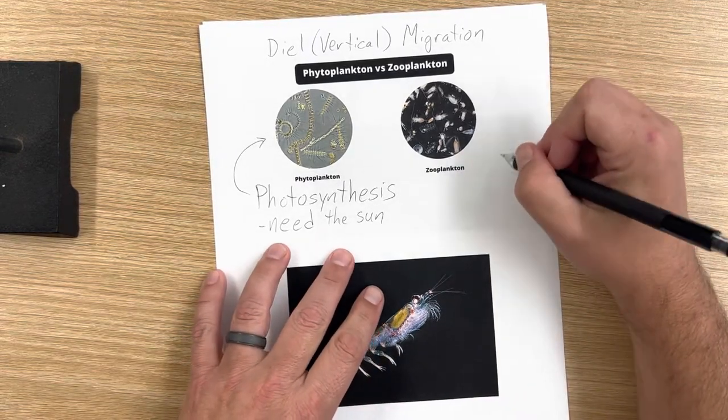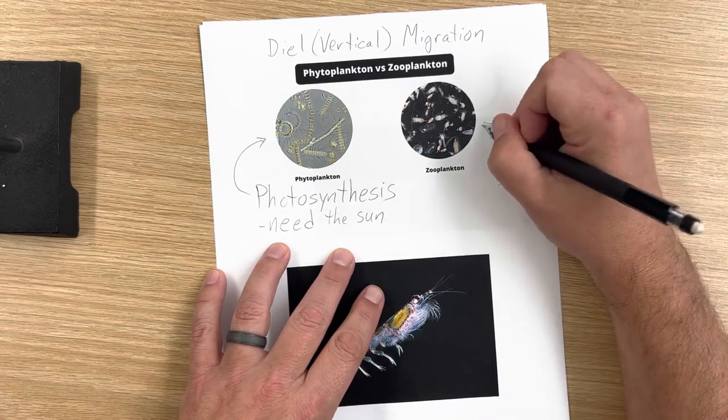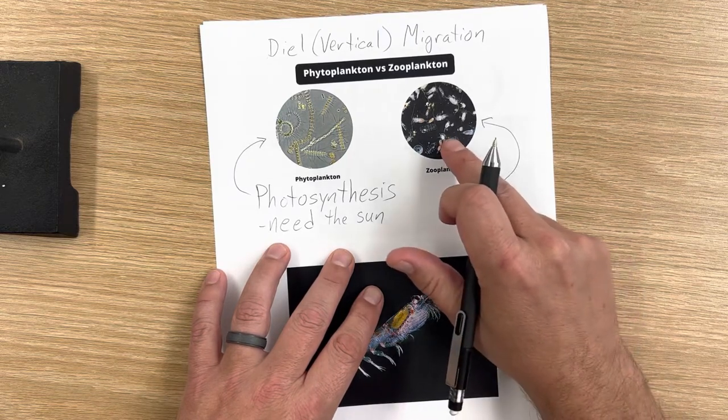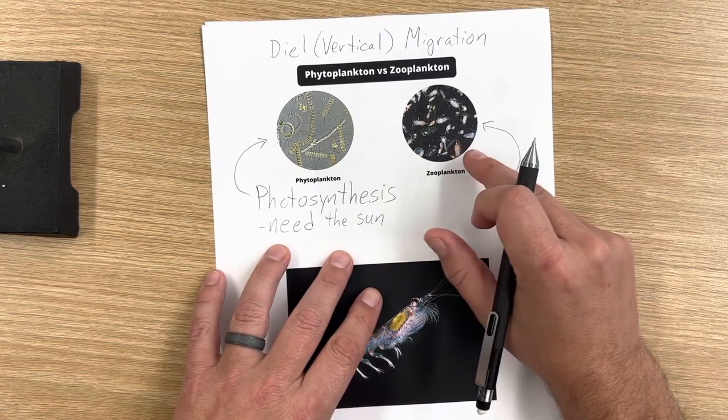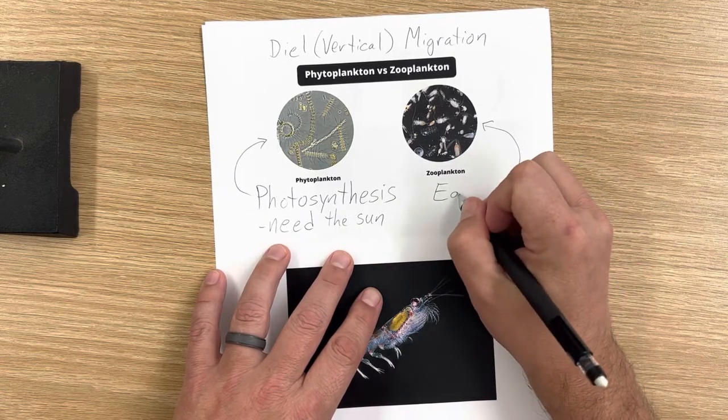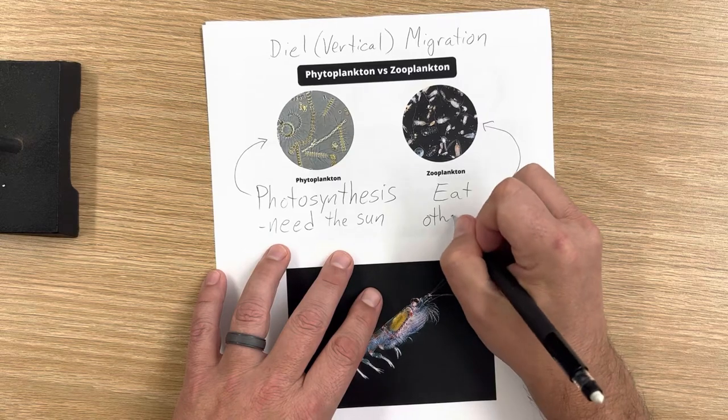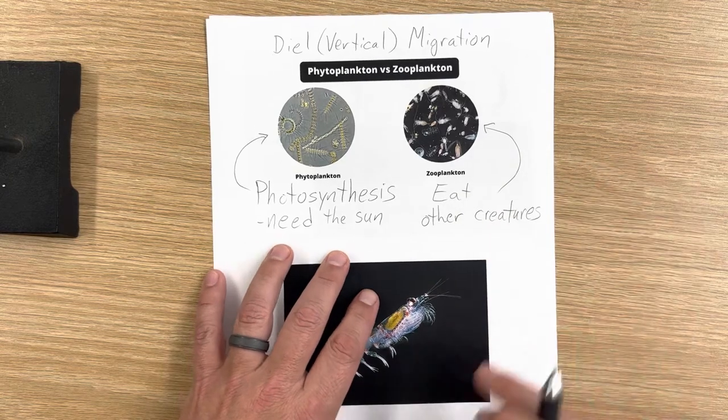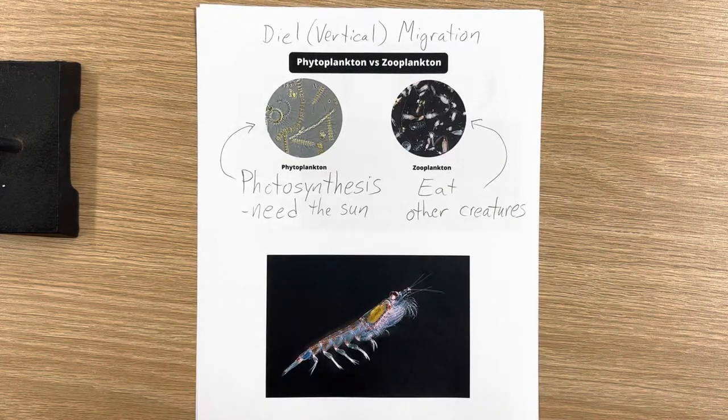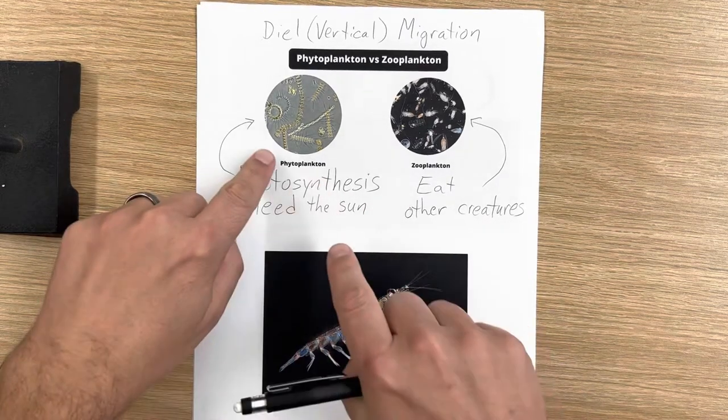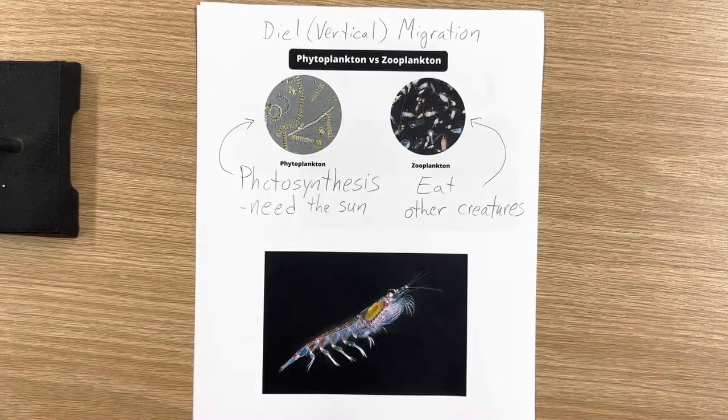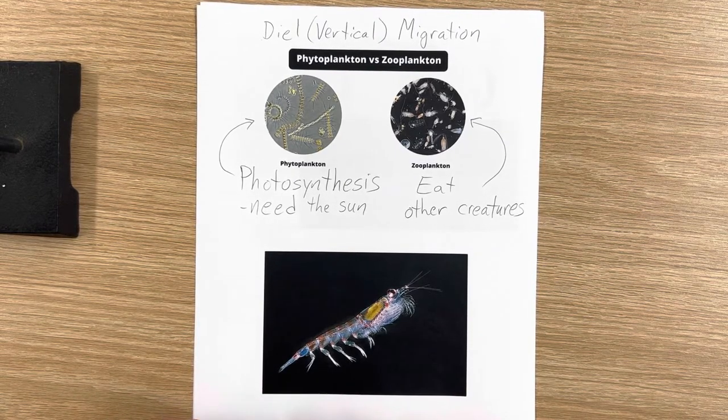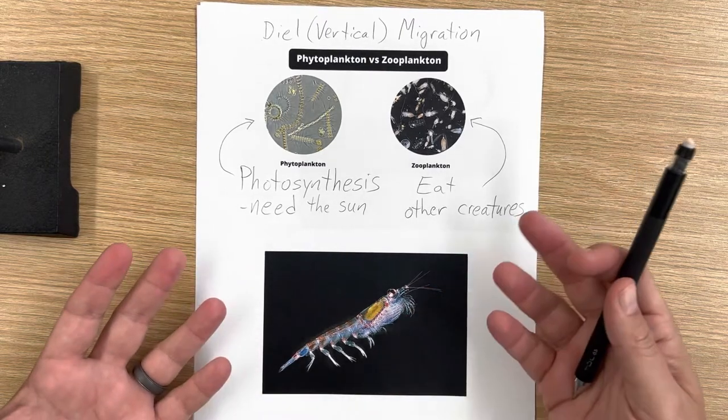Now zooplankton, they're different. Zooplankton don't go through photosynthesis. You can kind of see in the image here, they look like little shrimp or little crustaceans, and they eat other creatures. So they're like most of the other animals. They'll go around eating phytoplankton, they can eat each other, or they can eat little bits of detritus, dead clumps of cells, things like that that are already in the water.